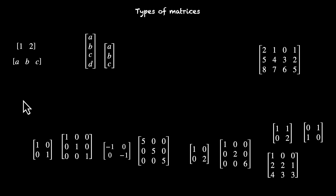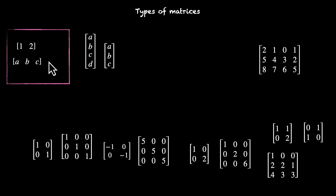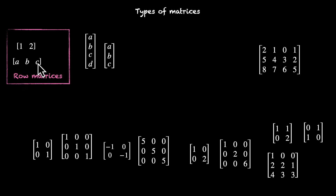So here's the first question: what makes these two matrices special? What's there in these two that's not there in the rest of them? Well, both of them have only one row, and that's what makes them special. These types of matrices are called row matrices — they have only one row, or you can say that all the elements are along this one single row.